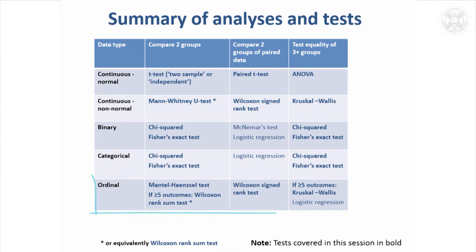For ordered data you've got the option of the Mantel-Haenszel test to compare two groups. Or if you've got quite a lot of ordered categories — five or more — then you can treat it as a continuous scale but use the ranks. So the Wilcoxon rank-sum test, or equivalently the Mann-Whitney U test, is one to consider.